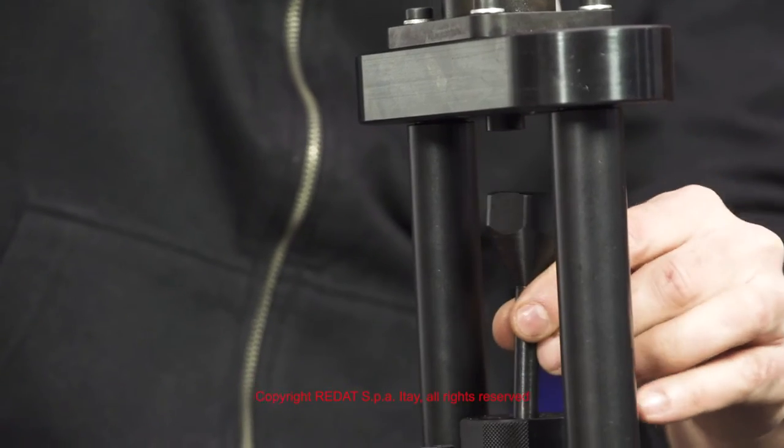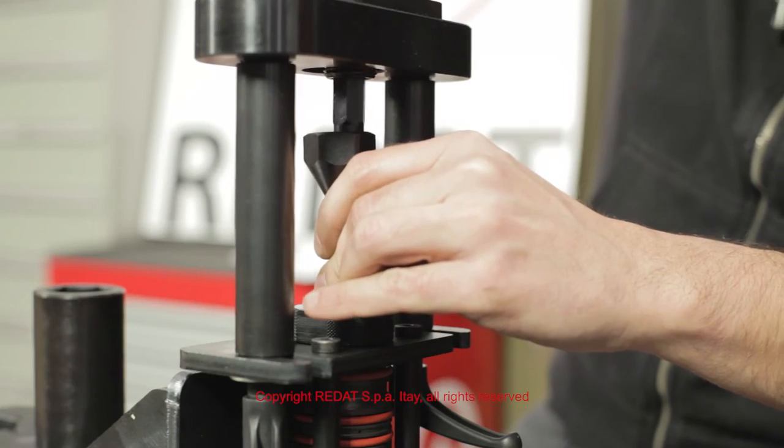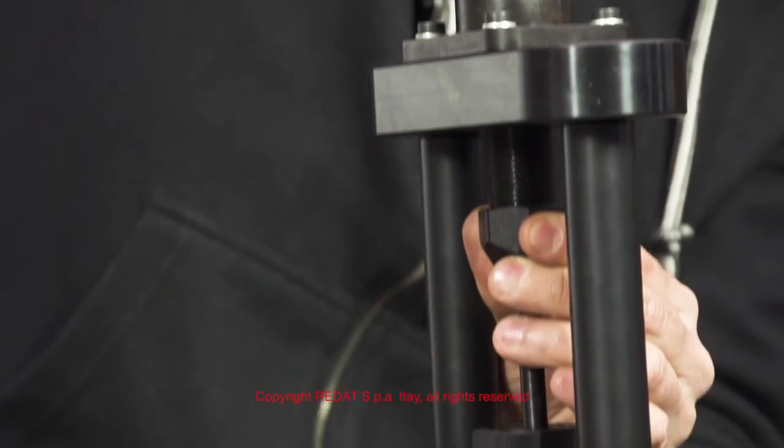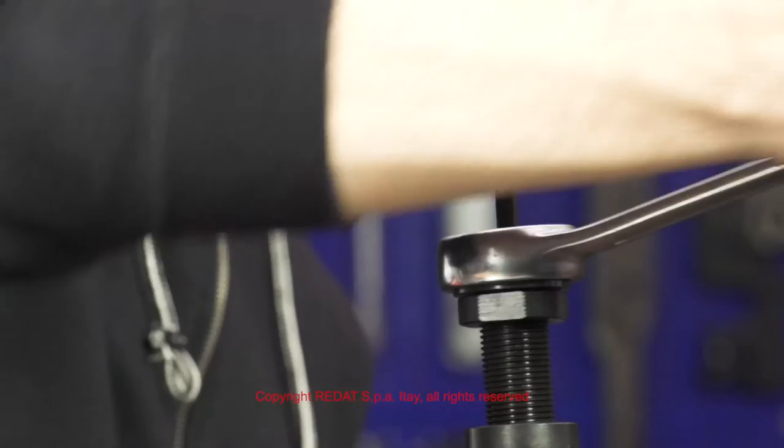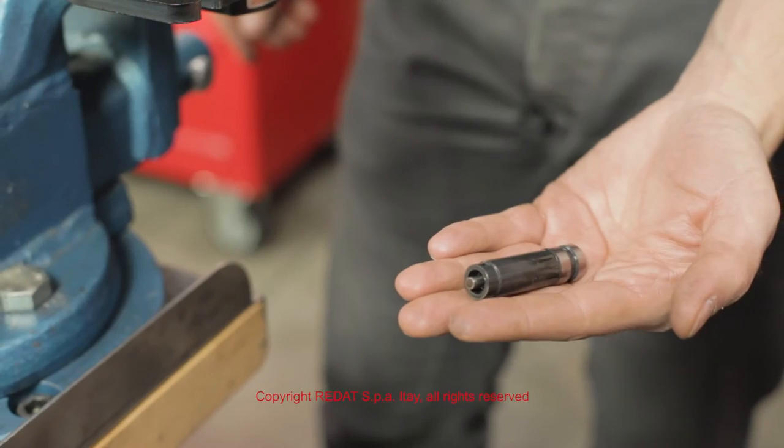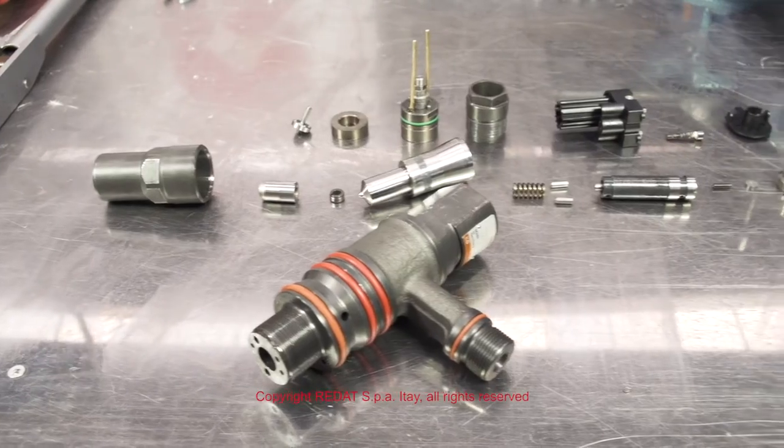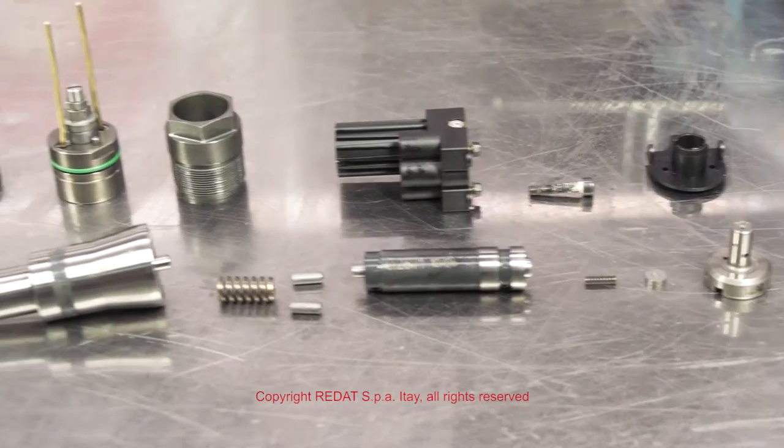Finally, using the other extraction tool we remove the plunger bush which is planted in the injector body using in this case the 36 wrench. The injector is now completely disassembled.